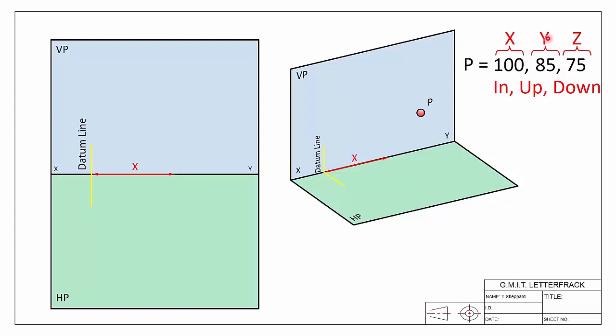Our next one, our y value, is the height of point P off of the horizontal plane or the ground. In our elevation, the x-y line represents the ground. So we're going to go straight up from that and that's going to locate the elevation of point P. That's the projection of P onto our vertical plane like so.